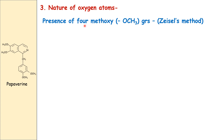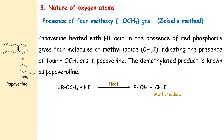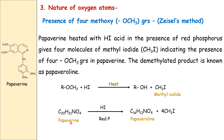Presence of oxygen atoms: there are four methoxy groups in papaverine, detected and estimated by the Zeisel method. Papaverine is heated with hydroiodic acid in the presence of red phosphorus, giving four molecules of methyl iodide, which indicates the presence of four methoxy groups. The demethylated product is known as papavarol. Therefore papaverine contains four methoxy groups.